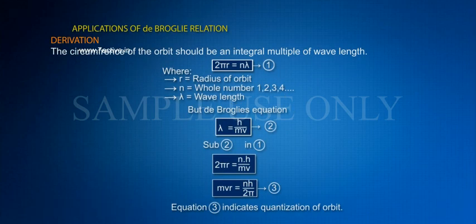Derivation: The circumference of the orbit should be an integral multiple of wavelength. 2πr = nλ (Equation 1), where r is the radius of orbit, n is a whole number (1, 2, 3, 4 to infinity), and λ is wavelength.